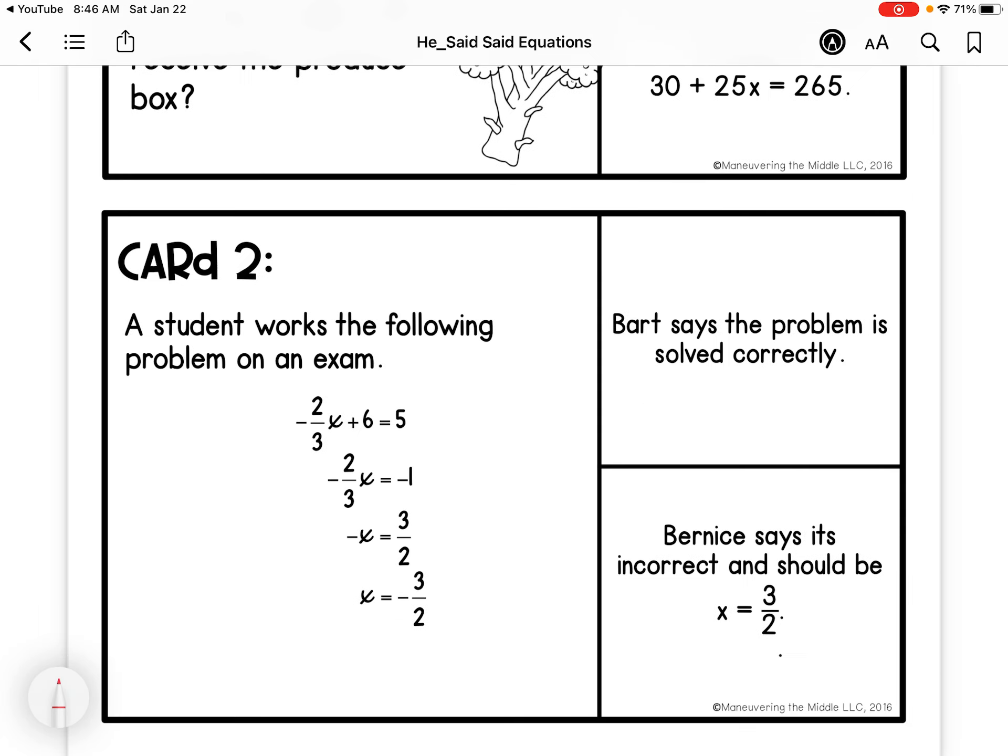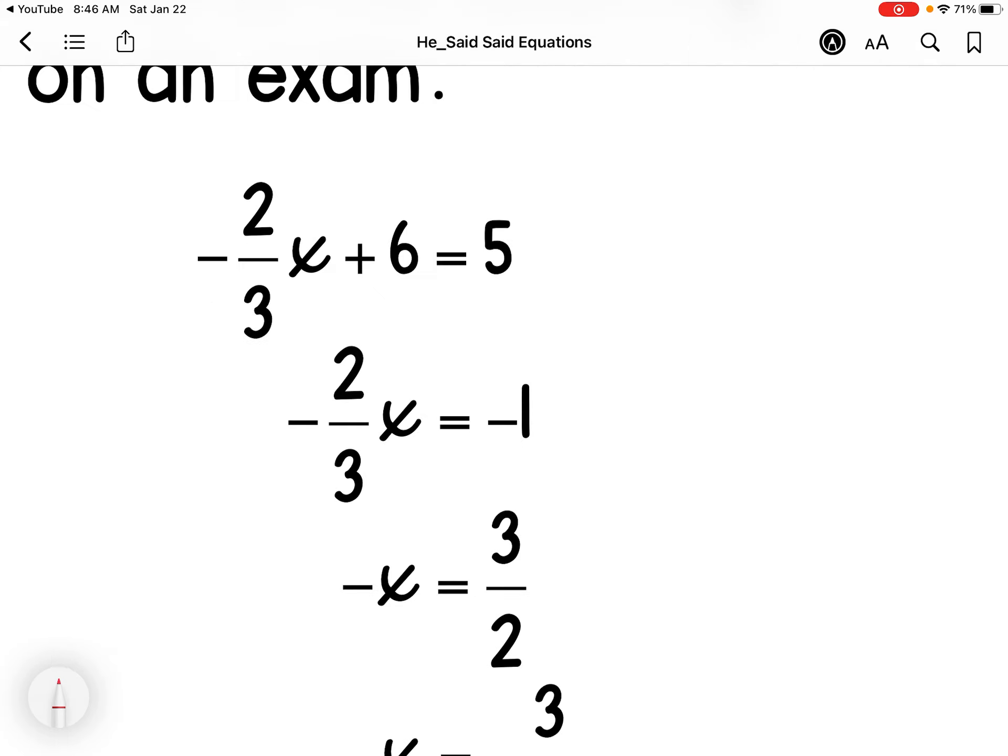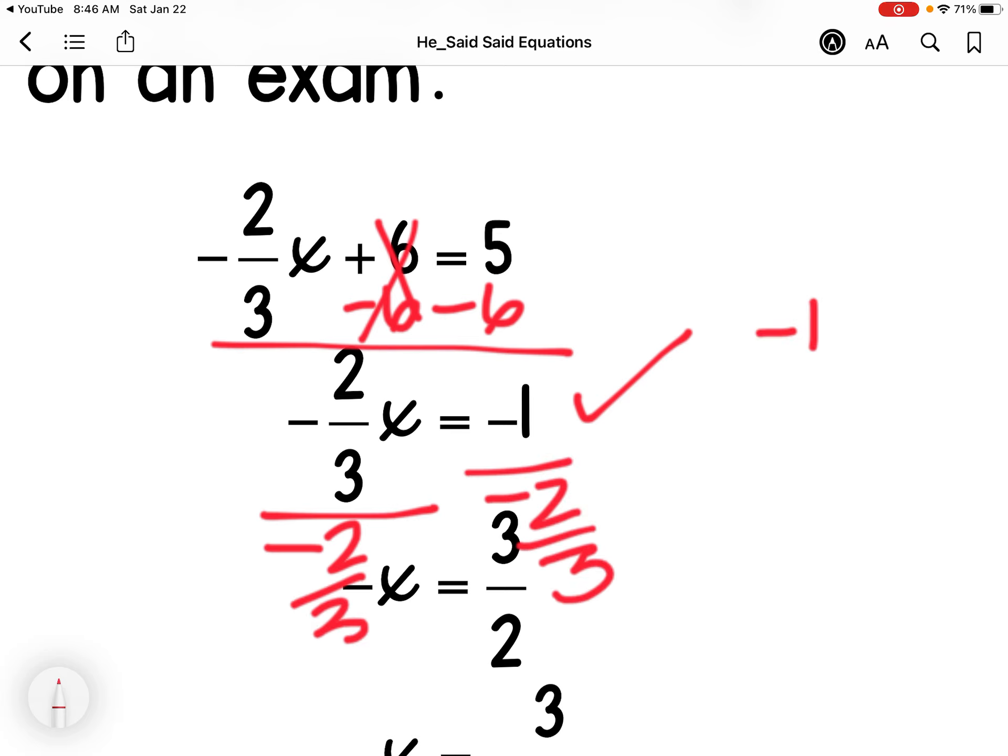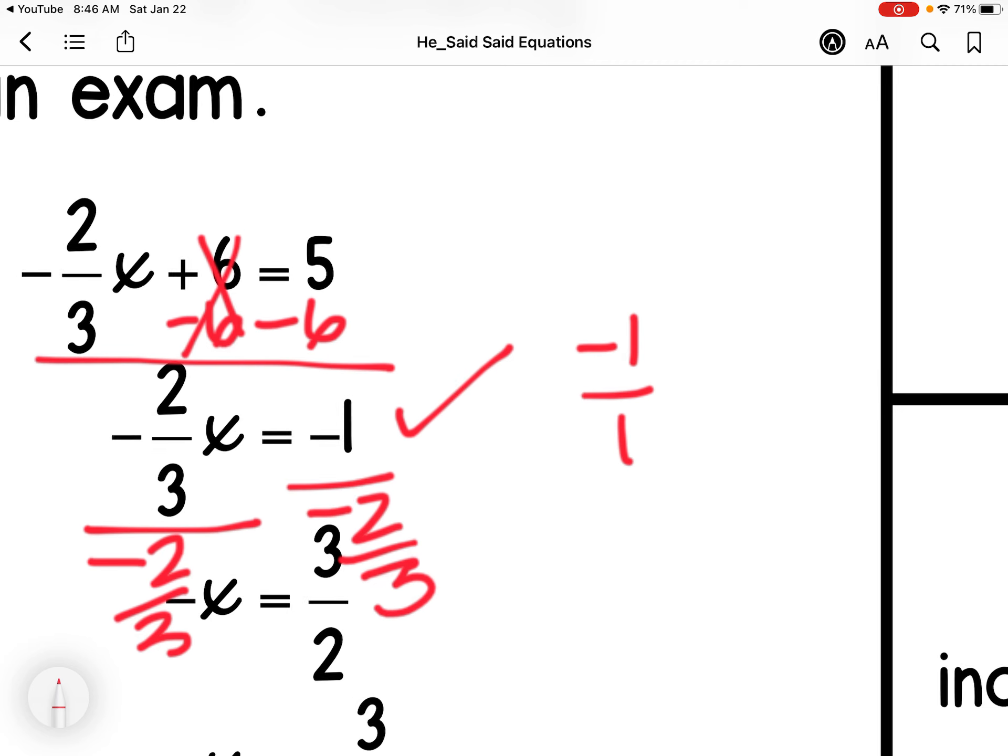The student works out the problem on an exam and they're solving it. So we're deciding who solved it correctly. I'm going to subtract 6 on each side and I get negative 1, that checks out. Then I'm going to divide by negative two thirds. So negative one over one divided by two thirds: keep, change, flip.